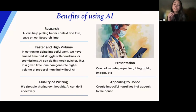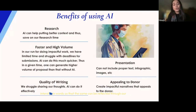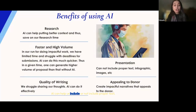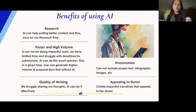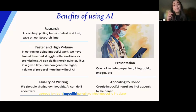Third is quality of writing. We struggle putting our thoughts with the same passion and intensity we intend, so that the same can be reflected through our proposals — AI can do it effectively. Fourth is presentation: AI can help us include proper text, infographics, images, etc. For example, the photo you see right here on your slide has been created by AI — it was given a prompt of a person using AI in a professional capacity. Fifth, AI helps in appealing to the donor by creating impactful narratives.